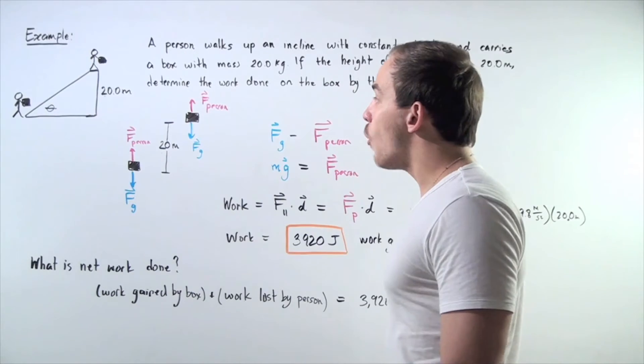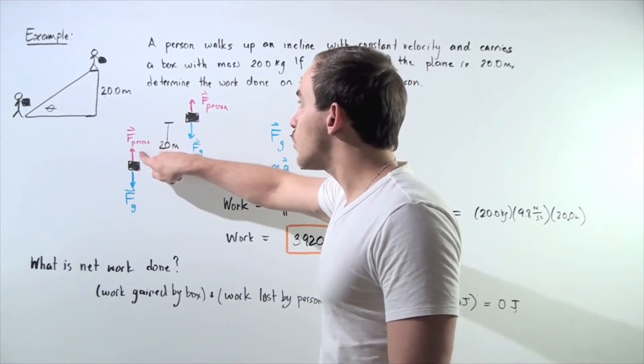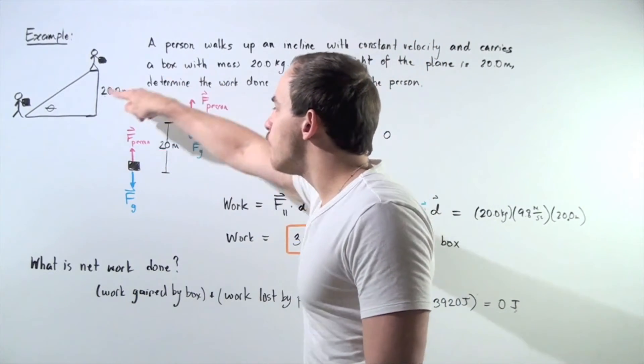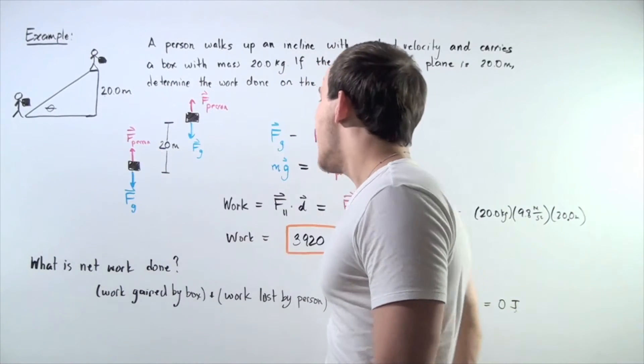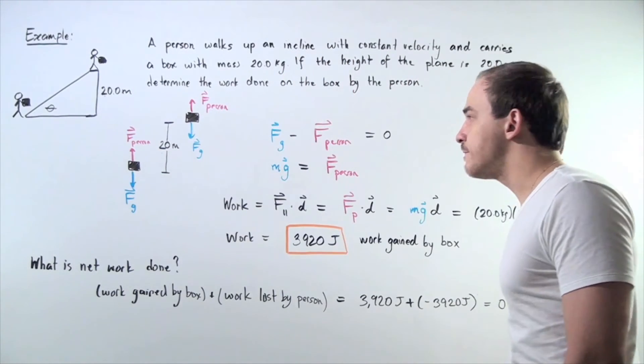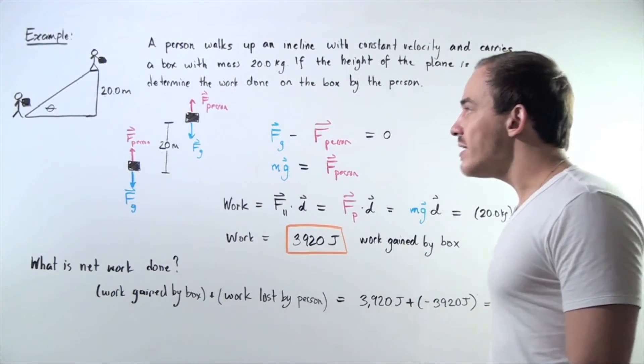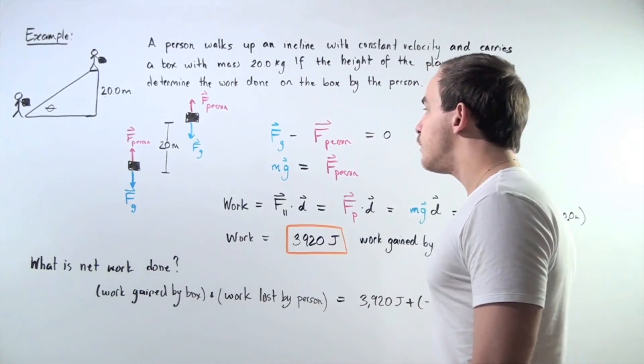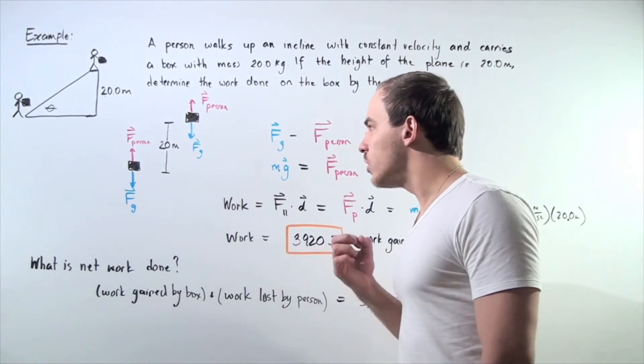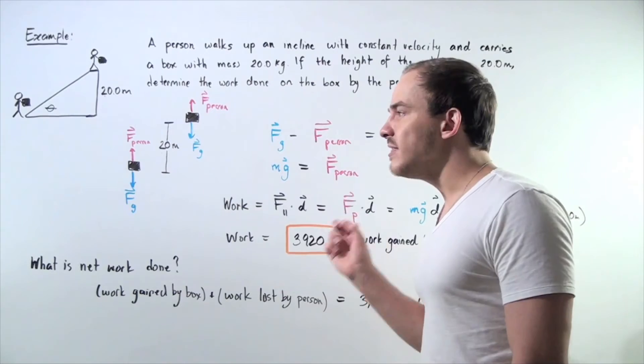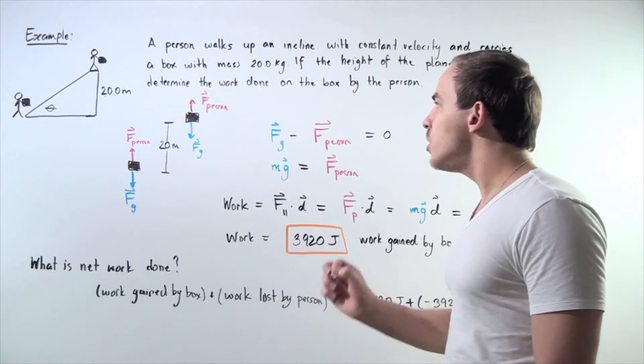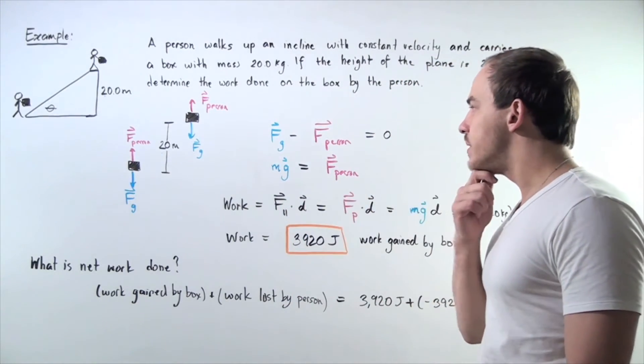We found the force acting in the same direction of motion—it's the force created by the person on the box given by Fp. So what is the work? We can use our formula: work equals the force that acts in the same direction as displacement multiplied by our displacement.